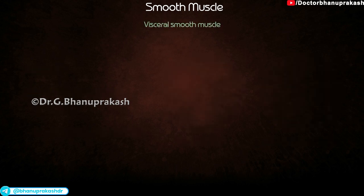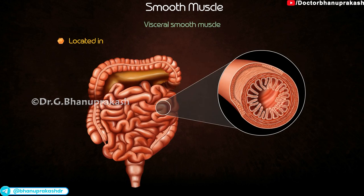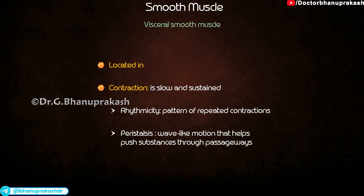Visceral smooth muscle is located in the walls of hollow organs. Contraction is slow and sustained. Rhythmicity is the pattern of repeated contractions. Peristalsis is a wave-like motion that helps push substances through passageways.